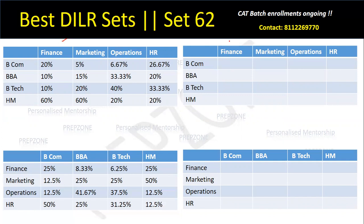So this is what is given to me, and I'm trying to re-create this table. The original table was given in terms of percentage, and now I have to take one variable, say X, and put all of these variables in terms of X so that I can take the ratio and fill all the values accordingly. The standard way is, because this is a percentage, I'll assume any of these eight variables. I'll assume the total number of students who belong to the Finance division to be 100X, because if I take the number as 100, the percentage calculations become much easier. You can take Marketing, Operations, HR, BCom, BBA, BTech, or HM — you can start from anywhere.